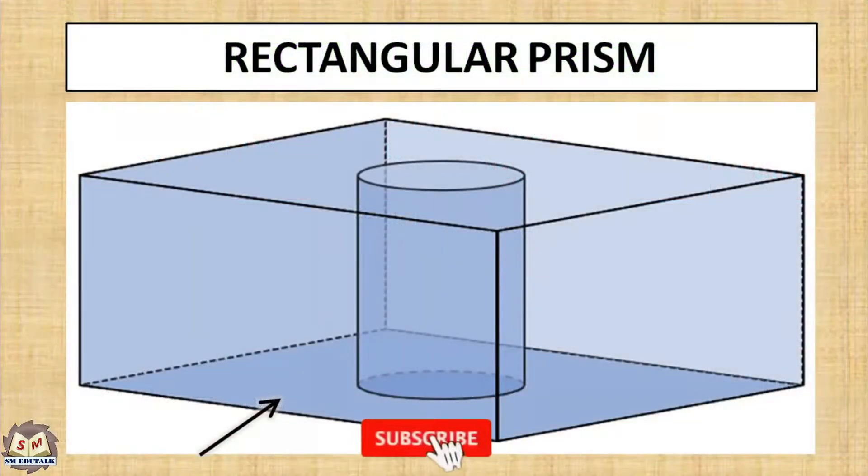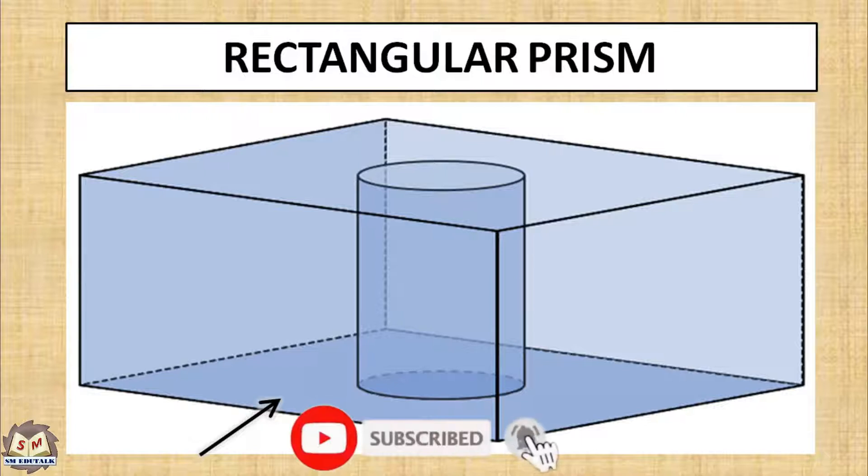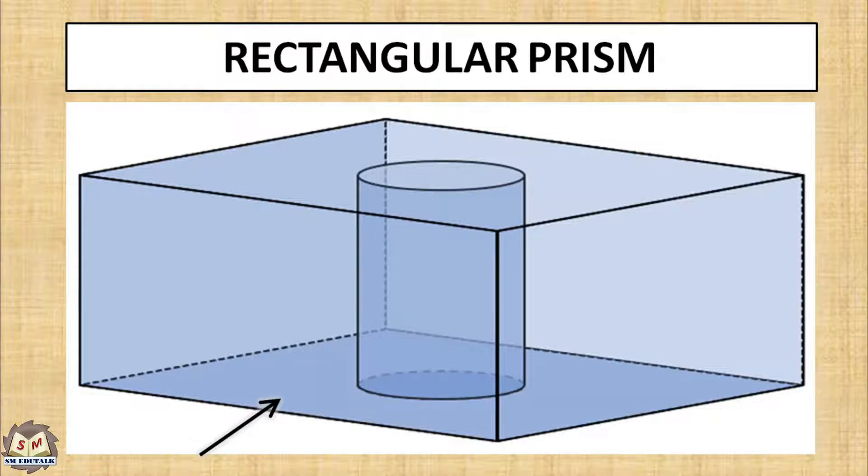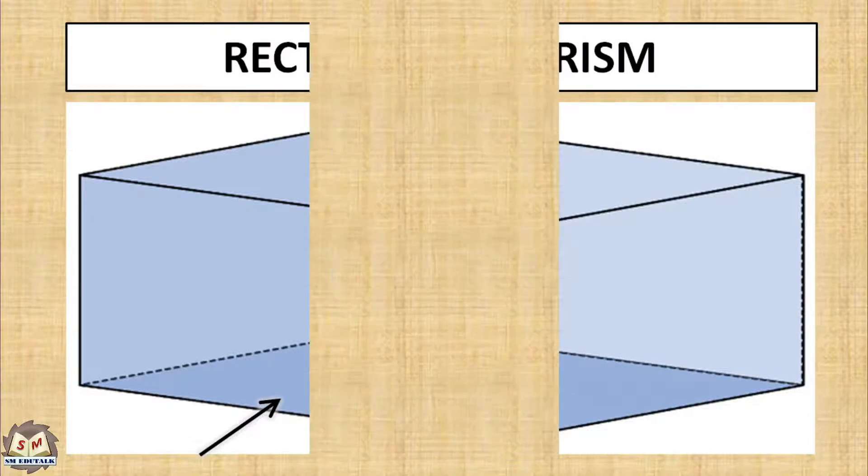I will explain the application of line types using an example. Figure shows a rectangular prism with a circular hole. The arrow shows the viewing direction to get the front view of the prism.